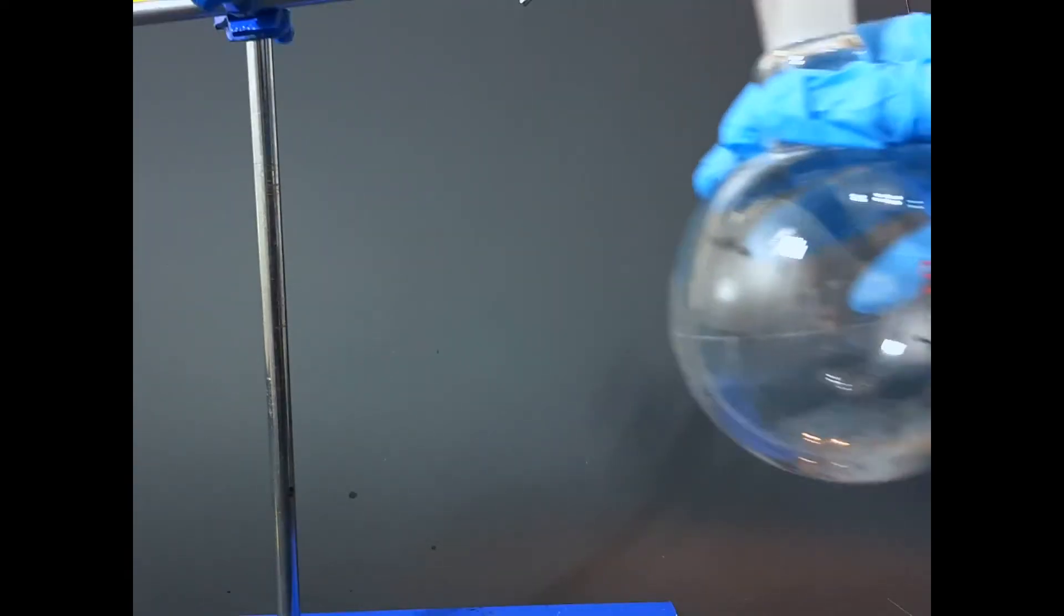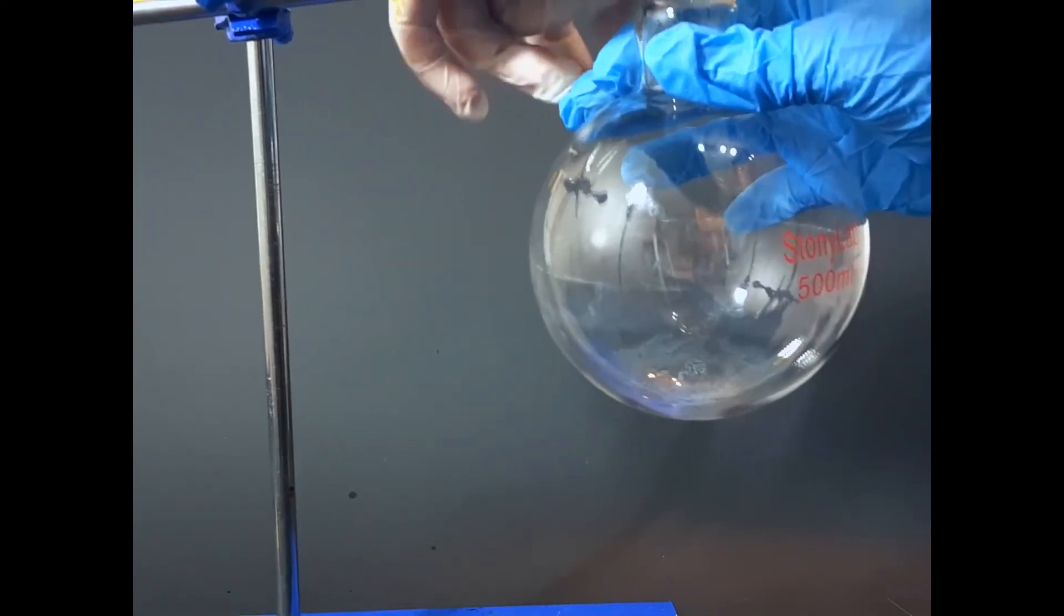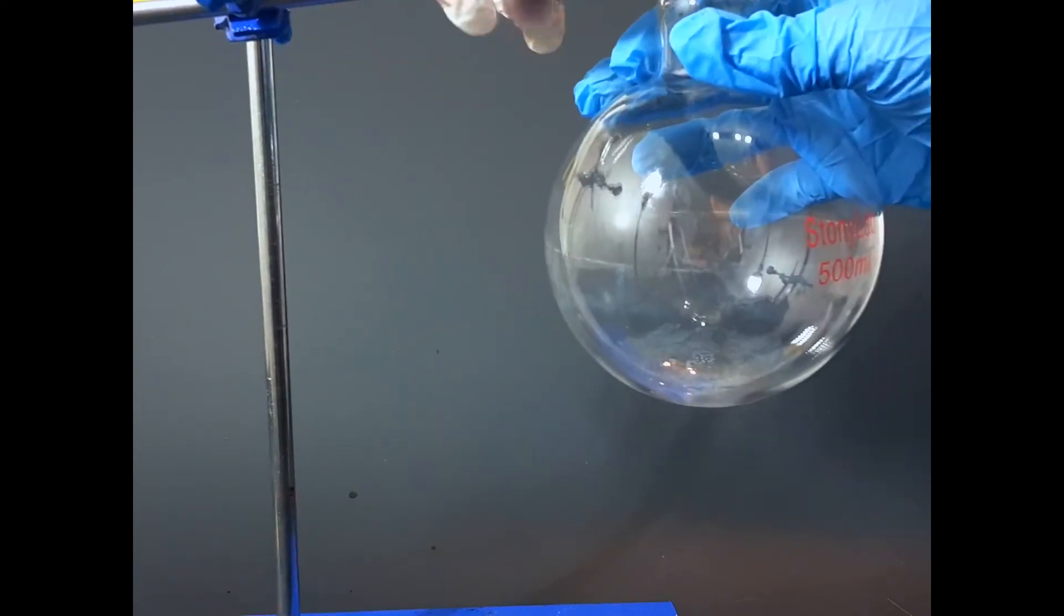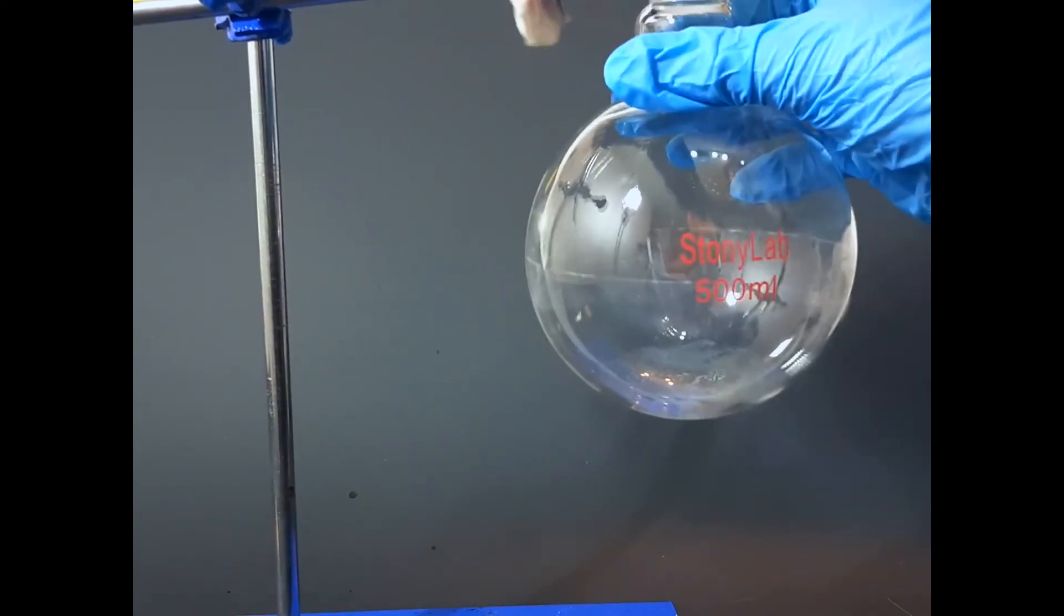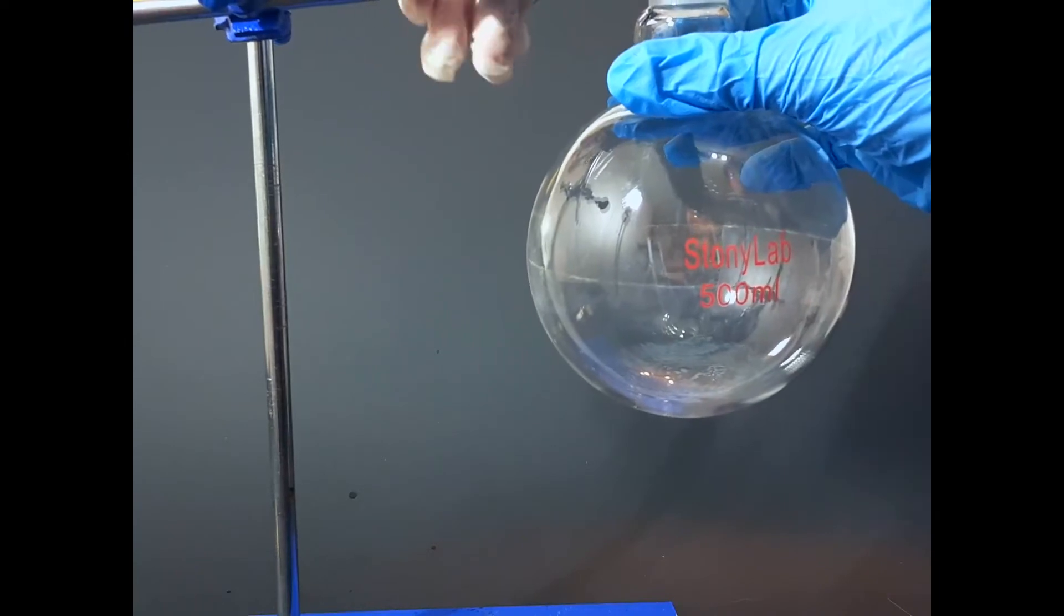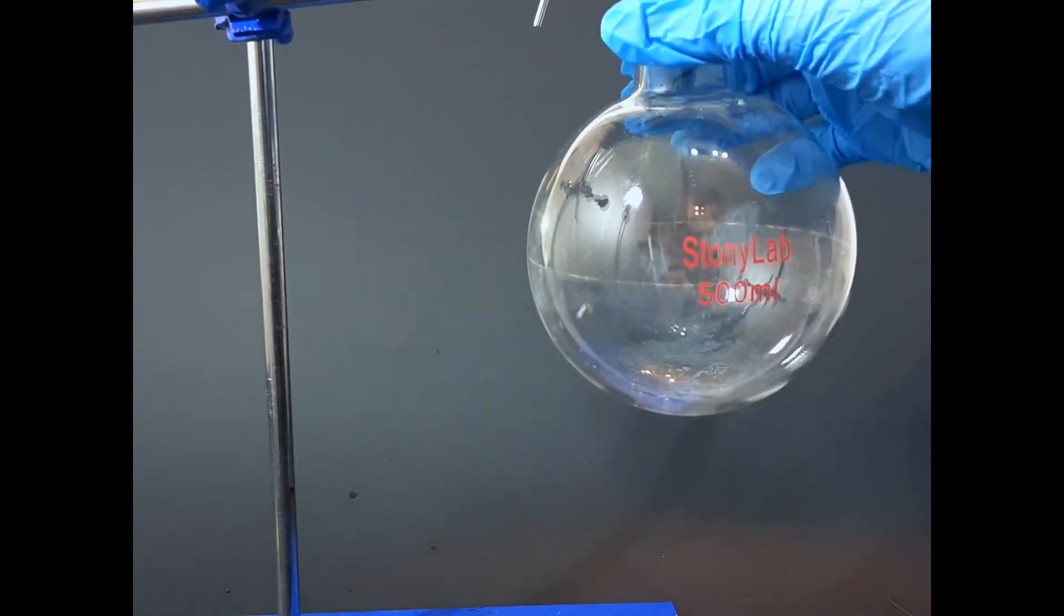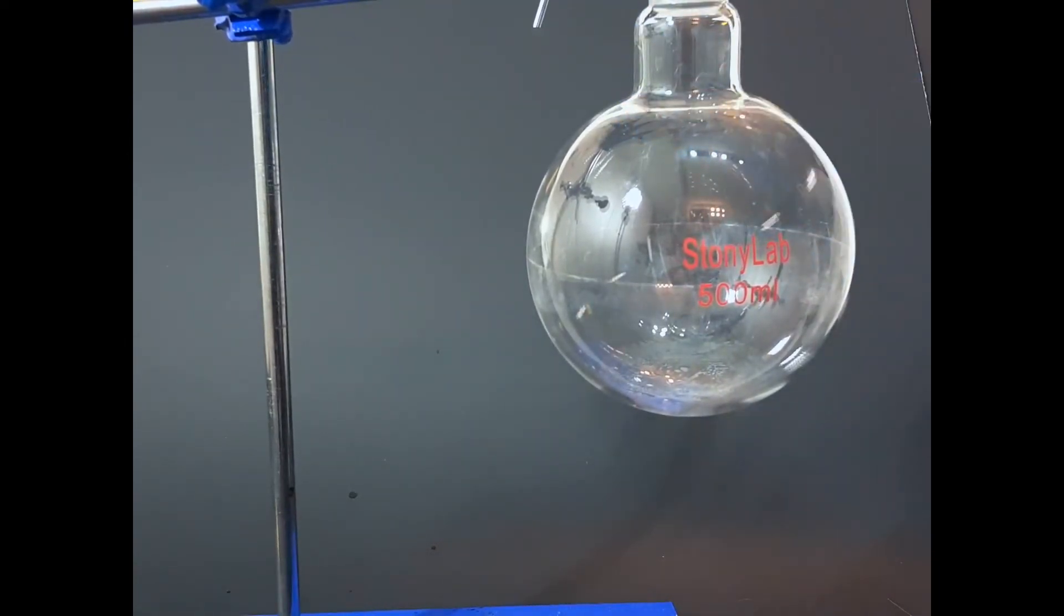Once I have everything nice and clear, all I need to do is pour it into a round bottom flask. As you can see here in my sand bath, I'm putting a round bottom flask and we're going to heat it up to make sure that all the DCM is gone so the caffeine can crystallize.